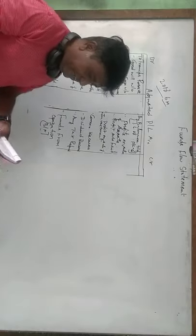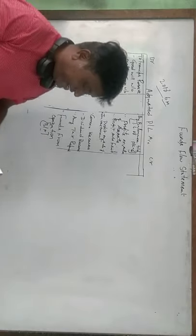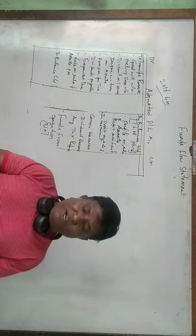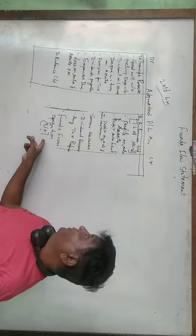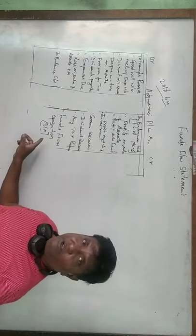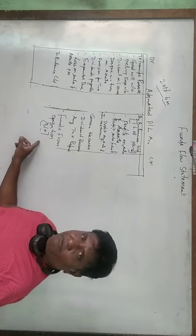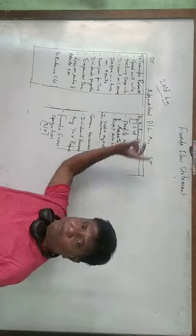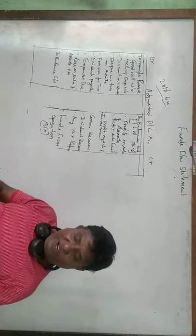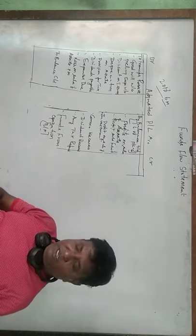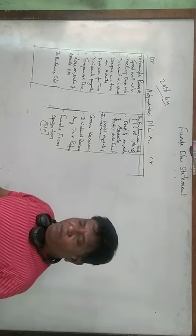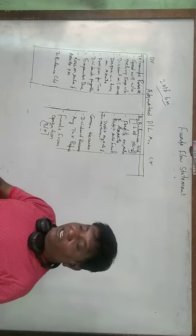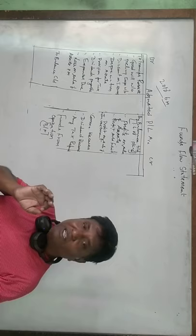I will read the question quickly: From the following, calculate funds from operation. When you are asked to calculate funds from operation, what account do we need to prepare? An adjusted profit and loss account. Funds from operation for the year ending 31st December 2011.